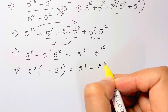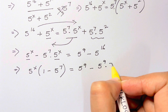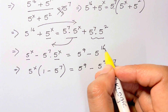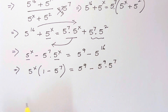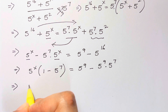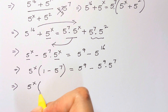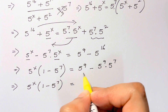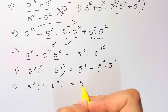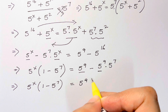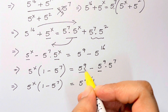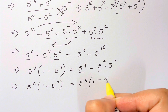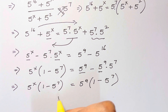I can write 5 to the 16th as 5 to the 9th times 5 to the 7th, since 9 plus 7 equals 16. So I have 5 to the x times 1 minus 5 to the 7th, equals 5 to the 9th times the quantity 1 minus 5 to the 7th, where I take 5 to the 9th out as a common factor.